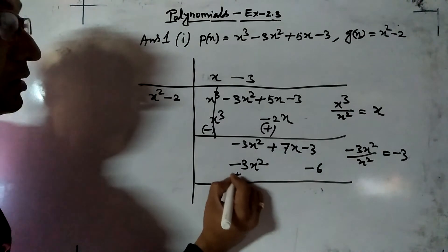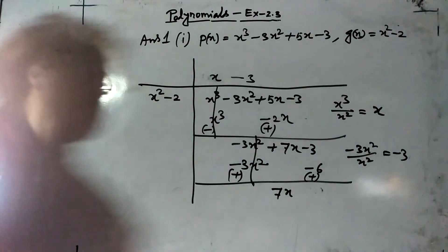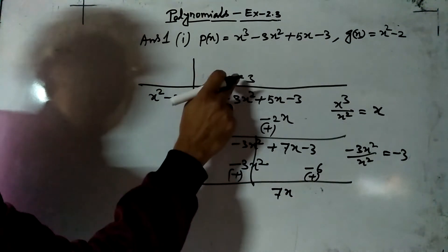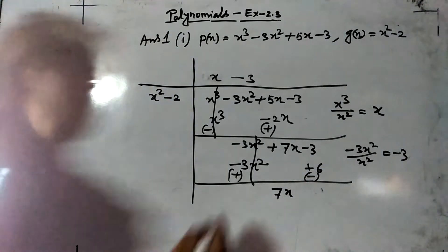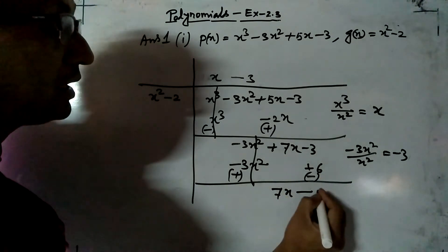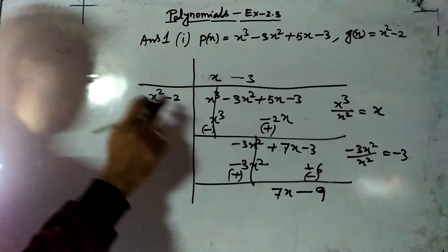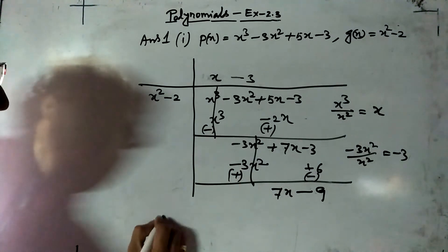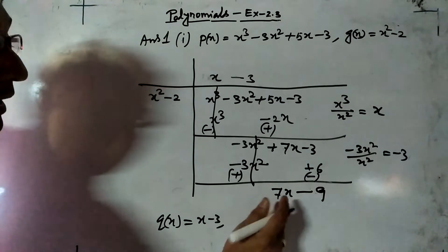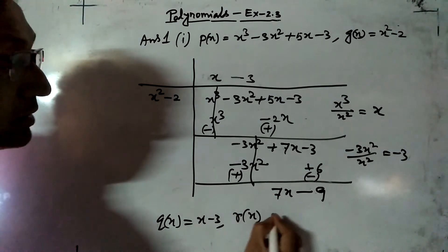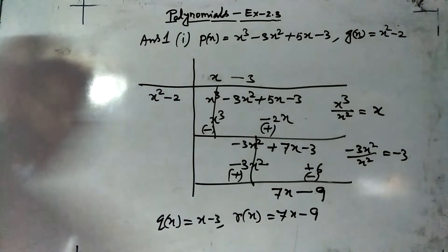After subtraction, changing signs: plus here, plus here. The x² terms cancel. Now we have 7x - 3 - (-6), which gives 7x - 9. This is the remainder because the degree of this polynomial is less than the divisor, so we stop here. So Q(x), the quotient, is x - 3, and R(x), the remainder, is 7x - 9. This is the answer to the first part of question 1.